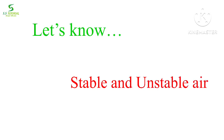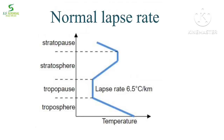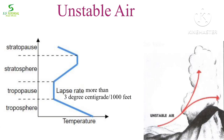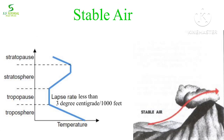Let's know about stable and unstable air. When air rises up, it cools adiabatically. In normal circumstances, air temperature falls almost 6.5 degrees centigrade per kilometer. But it does not always fall at the same lapse rate. If temperature falls rapidly with height — that means more than 3 degrees centigrade per thousand feet — it is generally considered unstable air. But if temperature falls slowly, less than 3 degrees centigrade per thousand feet, it is generally considered stable air.